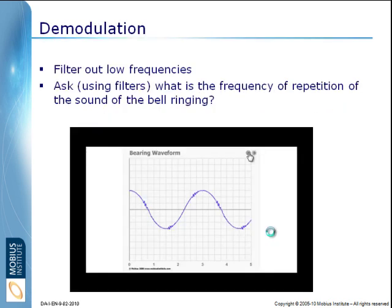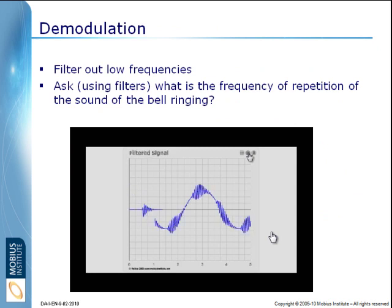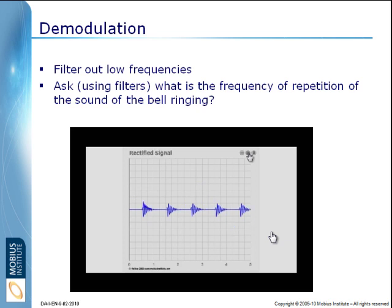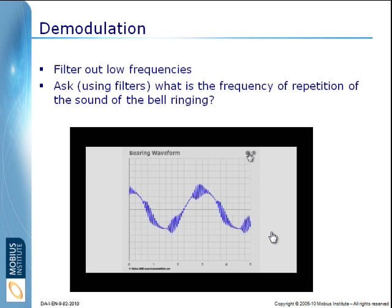What we can do is use filters to filter out all of the low frequency information from this machine — basically all of the vibration and noise the machine is creating — but not the high frequency sound that the bearing makes when it gets hit. Then we can ask, using filters, what is the rate of repetition or the frequency of the sound of the bearing ringing? When it gets hit, it makes a sound, and we can ask how frequently that high frequency sound is occurring.